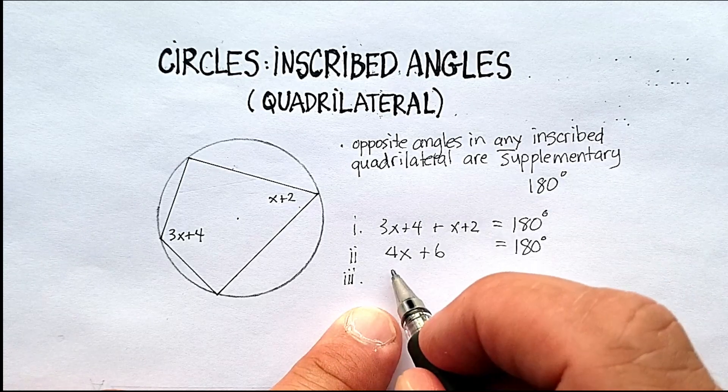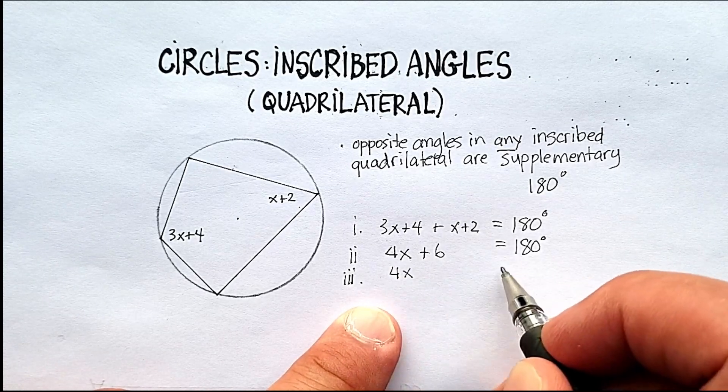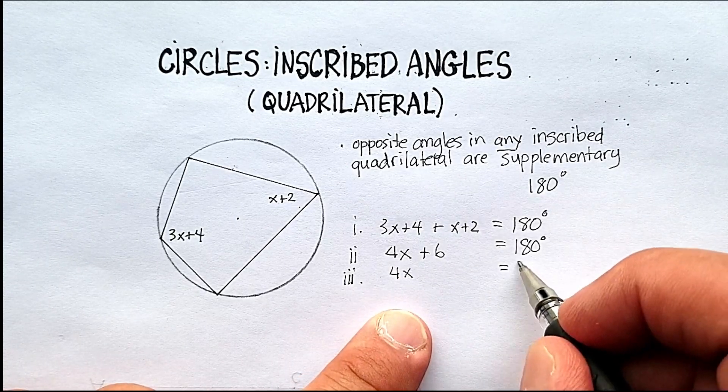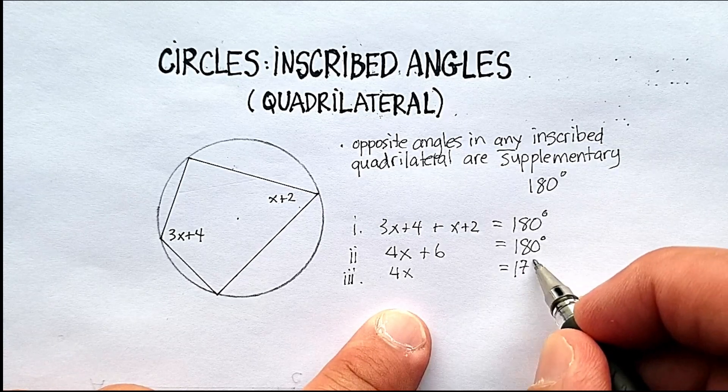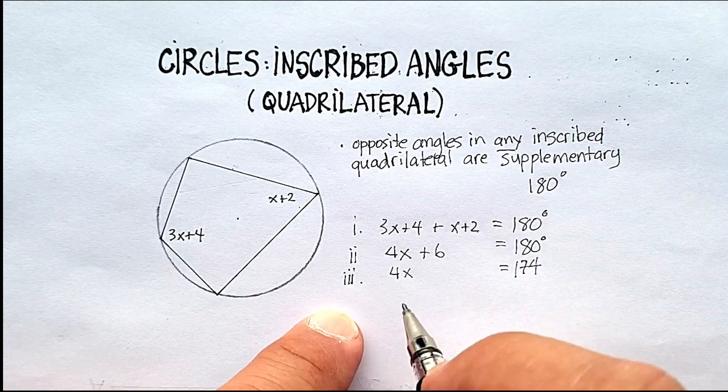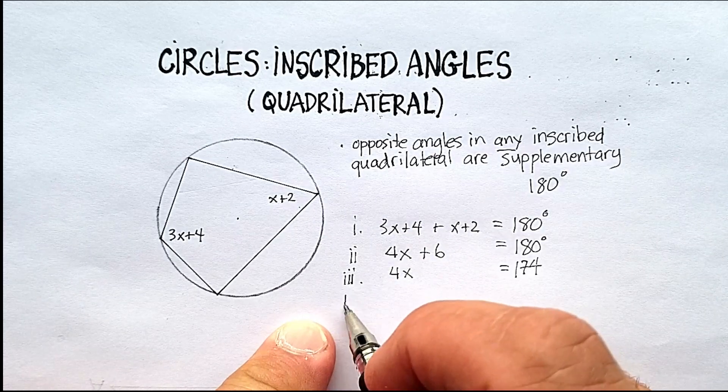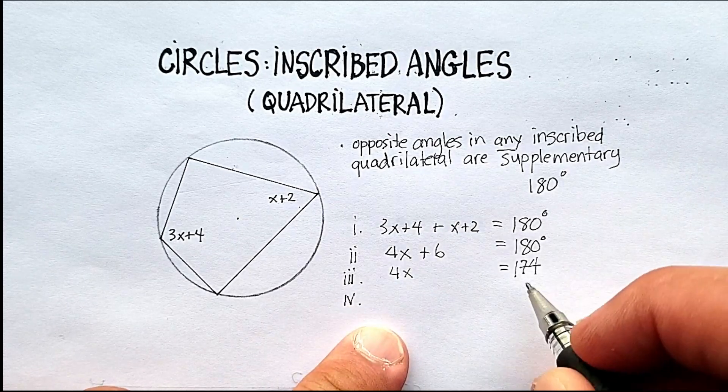Go ahead and subtract 6 from both sides. And I get 4x is equal to 174. I'm going to divide both sides by 4.